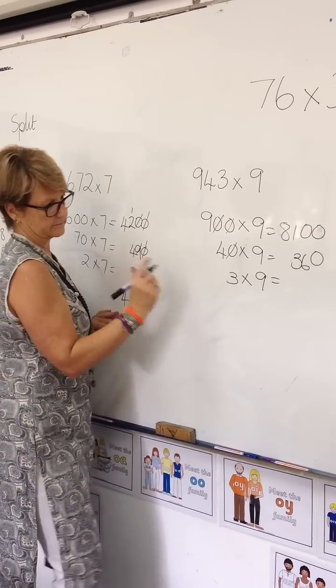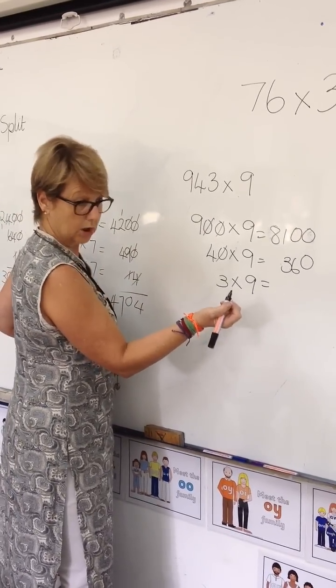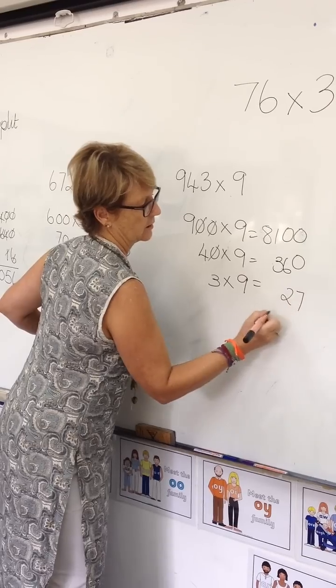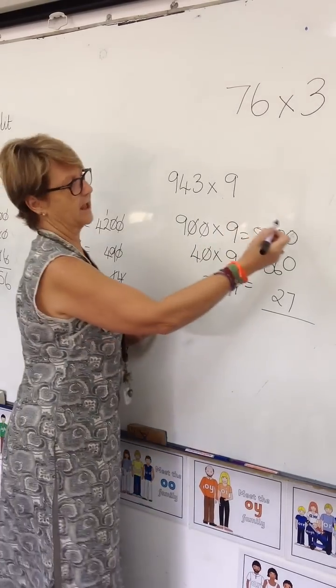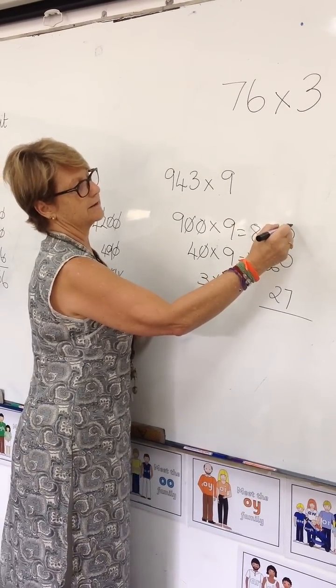3 times 9 is 27. Now what do I do? 3 times 9... 0 plus 7. Alright,